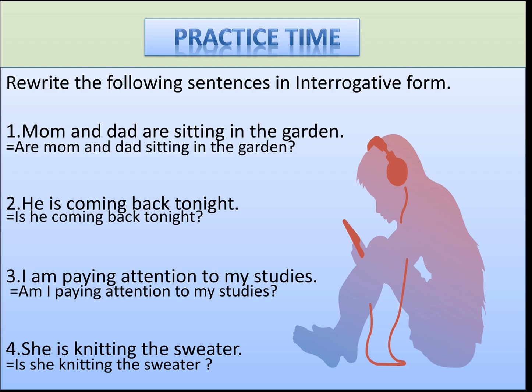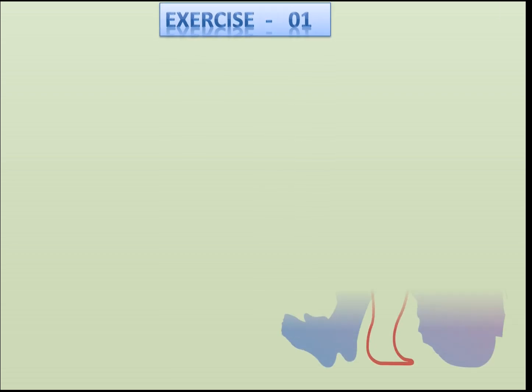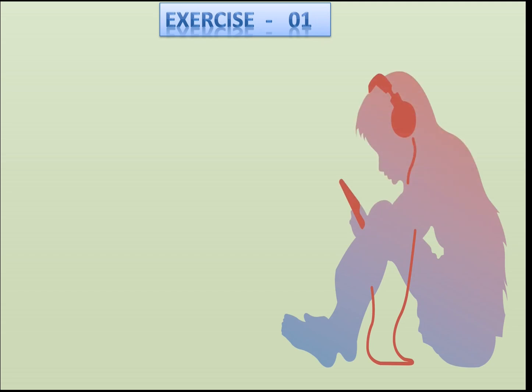I hope all of you have come to know about the three types of sentences under present continuous tense. First was affirmative, then negative, and the last was interrogative.